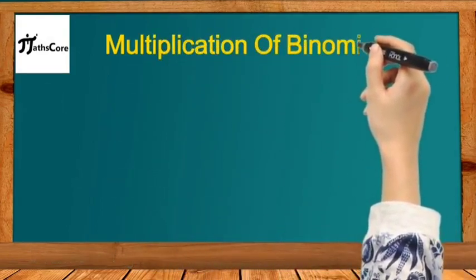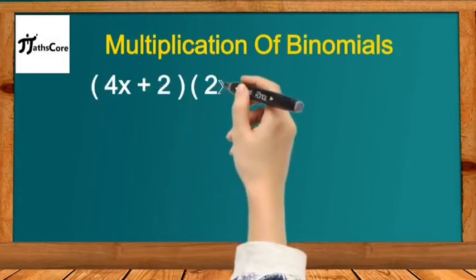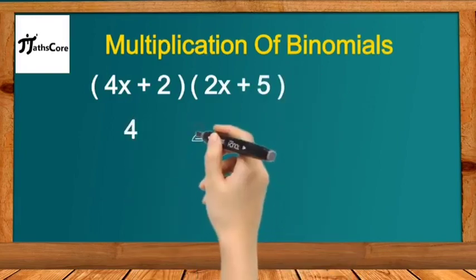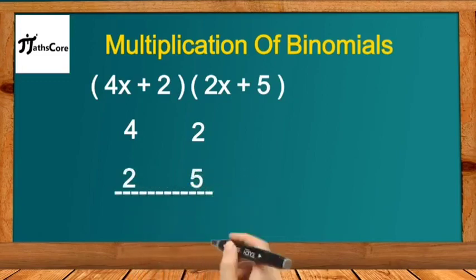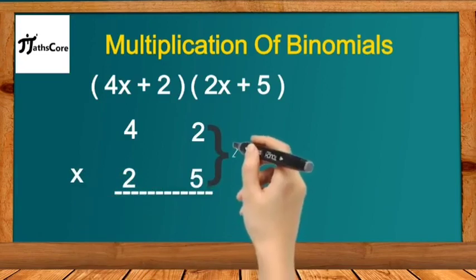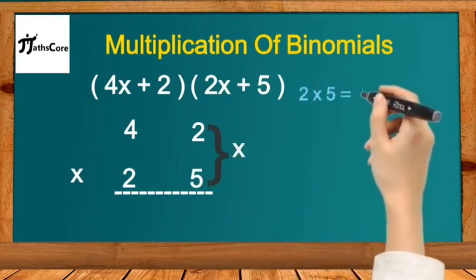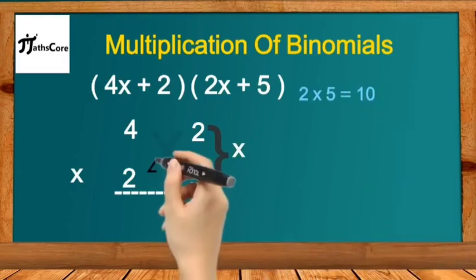Let's take the second example on multiplication of binomials: (4x + 2) multiplied by (2x + 5). Write the coefficients of the first binomial — 4 and 2 — and the coefficients of the second binomial — 2 and 5. This is again a multiplication of two-digit numbers. Using the Vedic ixi concept, first multiply the unit place numbers: 2 multiplied by 5 is 10. Write down 10 as it is — we don't take a carry number here.